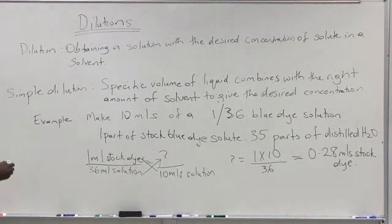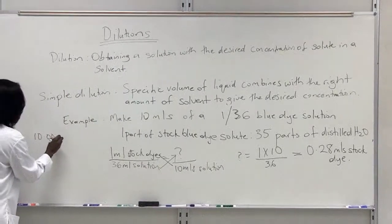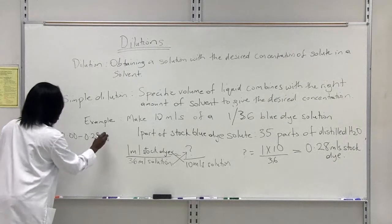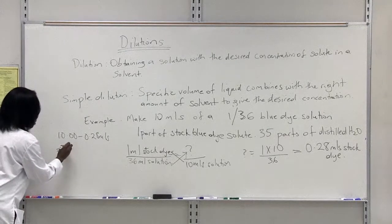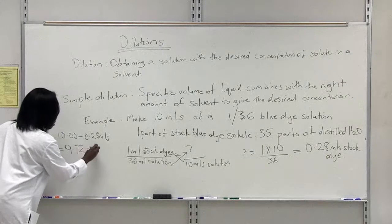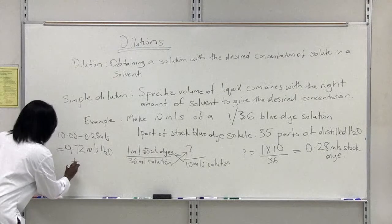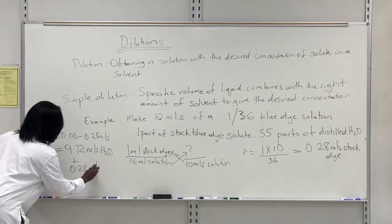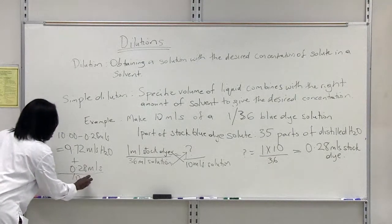That means you're going to be making up 10 minus 0.28 mils of stock dye. That would tell you that you're going to add 9.72 mils of water to your stock dye solute to give you 10 mils of solution.